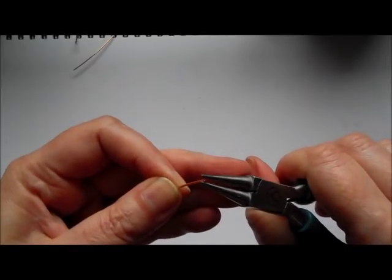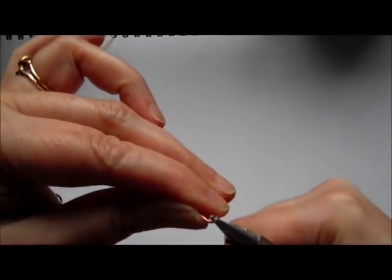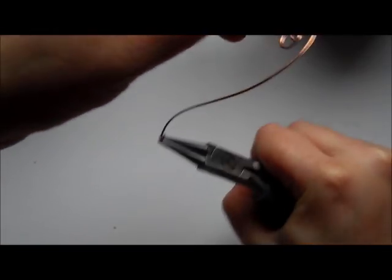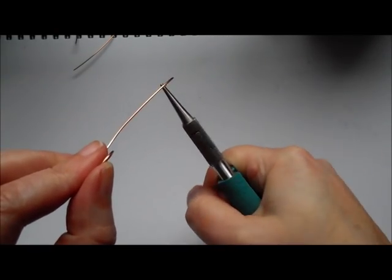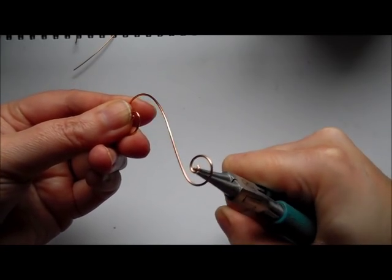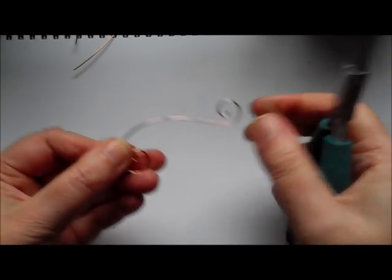So if I wanted the other end to go the other way, I would grip on the other end. Put that little curl in to start me off. And then holding well away I am twisting with my right hand. Twist. Twist. To form a smooth curve.